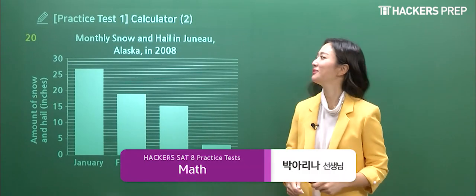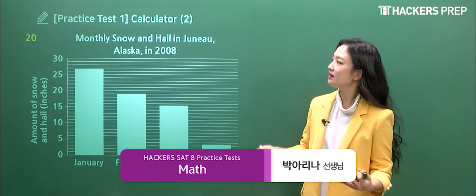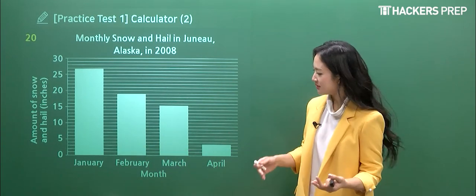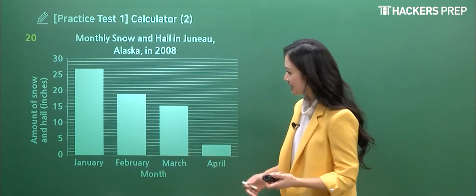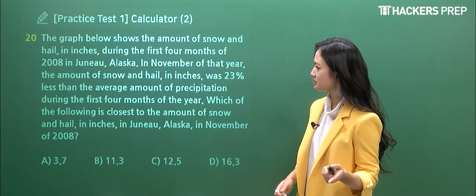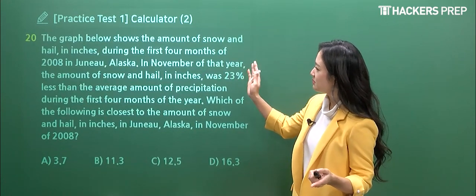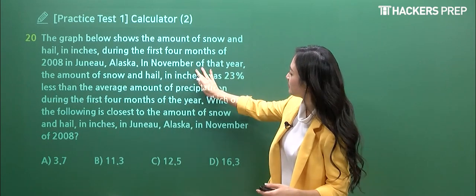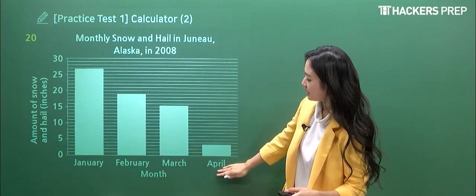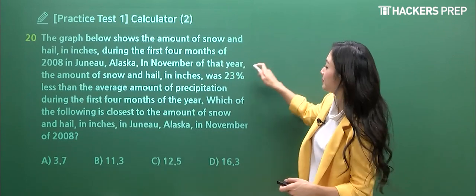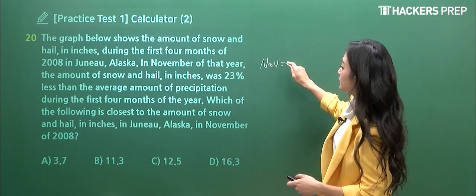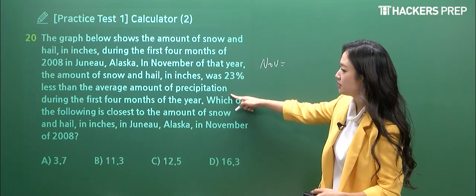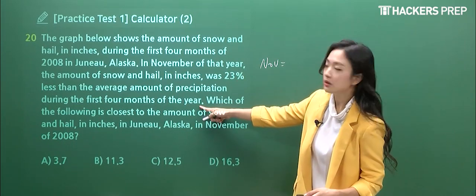So when we begin with question number 20 right away, what are they presenting? The monthly snow and hail in this specific area. So we have January, February, March, and April, and the question goes, the graph shows the amount of snow, what we just read through, so let's skip that sentence.